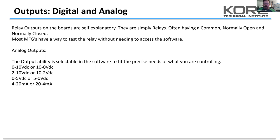Analog outputs on control systems are quite simple — they can be whatever you want. The typical options you'll see for an analog output are: 0–10V, 10–0V, 2–10, 10–2, 0–5, 5–0, 4–20mA, or 20–4mA. The board is quite flexible in that it can send out just about any analog signal you want, and again that's all configured inside the computer.